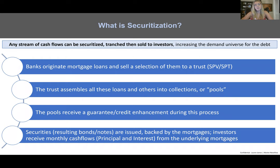To kick things off, let's talk about securitization more broadly. Securitization is for any stream of cash flows to be securitized, tranched, and then sold out to investors, which will increase the demand universe for the debt and lower the cost of funds and cost of borrowing for the people taking on this debt. Banks originate mortgage loans and then sell a selection of them to a trust, like an SPV or an SPT, which for our terms are synonymous. The trust then assembles all of these loans and puts them into collections — so-called pools — which then receive a guarantee or credit enhancement during this process, representing the seniority in the debt stack and the amount of safety and protection that this debt has.